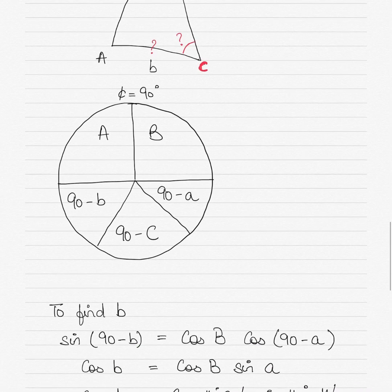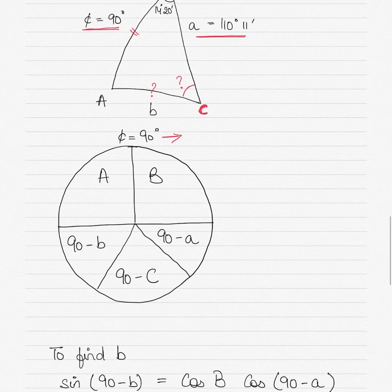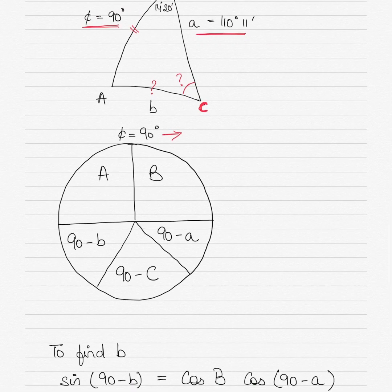You draw a circle as in Napier's rule, divide it into two semi-circles. The top semi-circle is divided into two parts and the bottom semi-circle into three parts. You start by writing the 90 degrees — whatever is 90 degrees, you write it outside the circle. If it's an angle you write the angle, if it's a side you write the side outside. Side C here is 90 degrees.